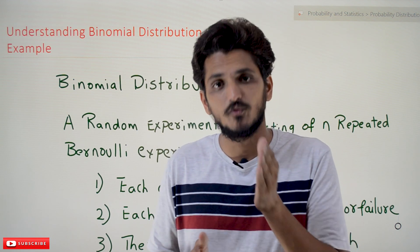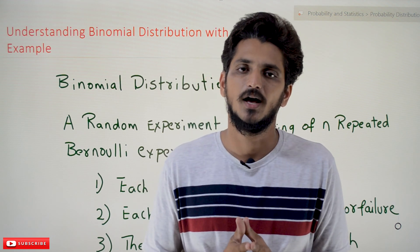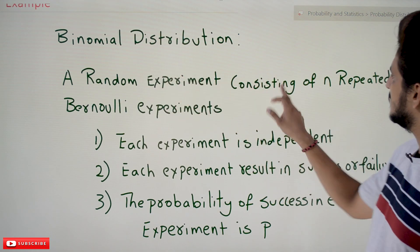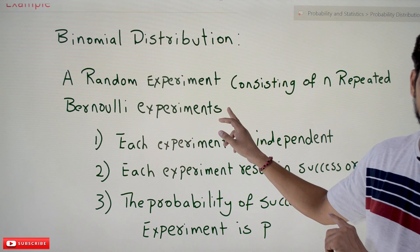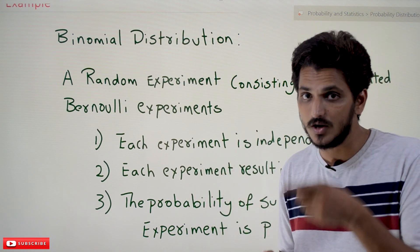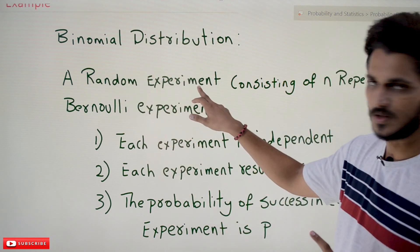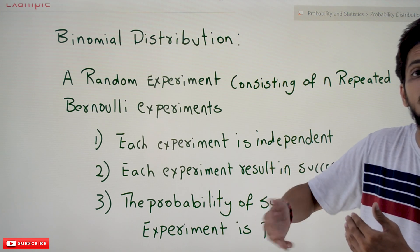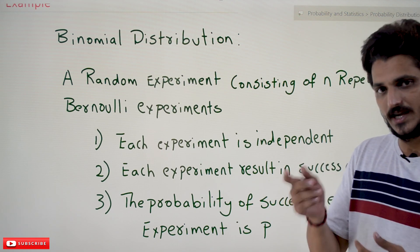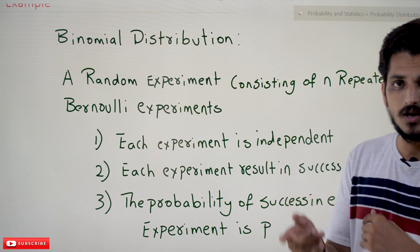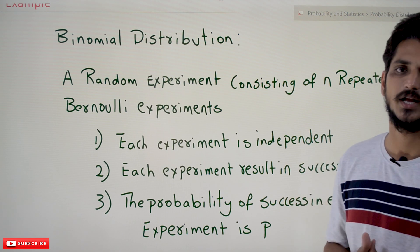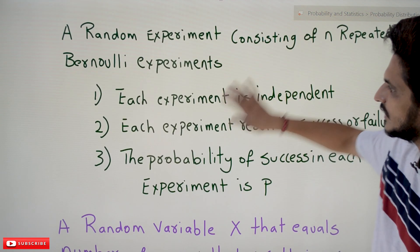In this class we are going to understand when we need to apply binomial distribution and what is the probability mass function for binomial distribution, with a simple coin example. Binomial distribution is a random experiment consisting of n repeated Bernoulli experiments. In our last class we discussed that a Bernoulli experiment should have only two outcomes — either success or failure. Tossing a coin is a Bernoulli experiment. If you repeat this experiment n times, then we can make it a binomial distribution, but it has to follow some conditions.